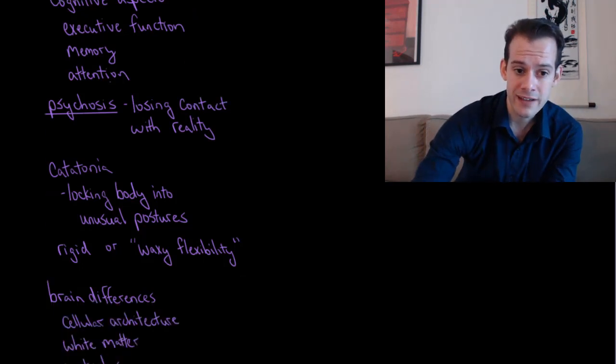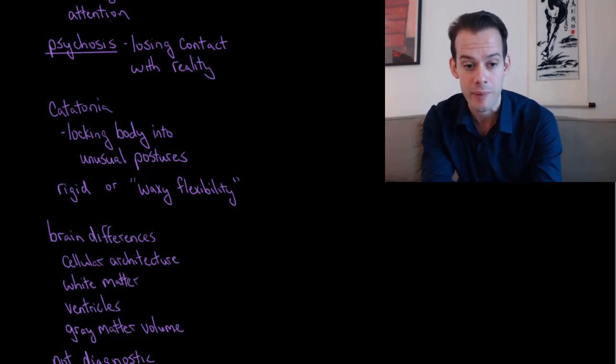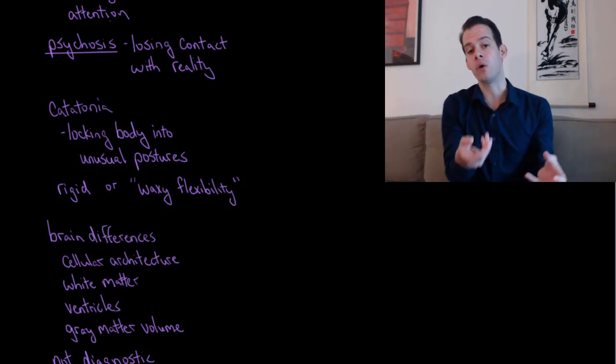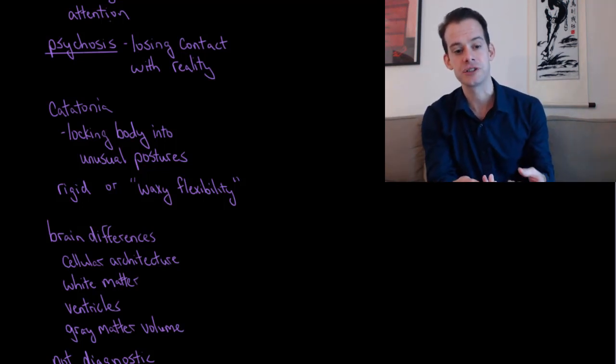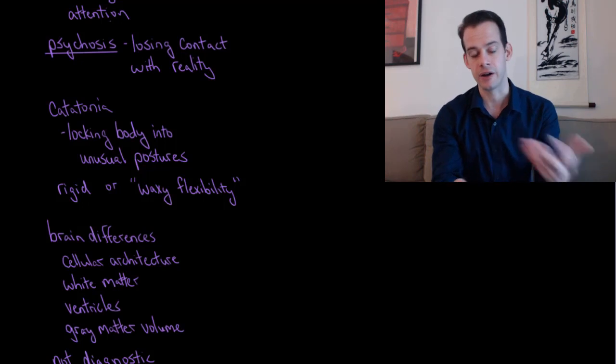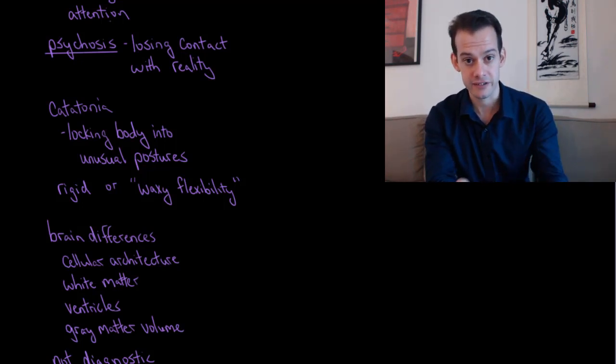I'd like to describe one type of catatonia here. This is not the only type. There's other listings in the DSM including things like mutism that would fall under catatonia, abnormal motor behavior. One thing we see is locking the body into unusual postures. This is one common type of catatonia that we see in patients with schizophrenia. They might hold strange body postures. Within this, there's different ways that this can occur. In some cases, they become very rigid and they'll resist movement. If a nurse or other staff member attempts to move the patient, they'll resist that movement in this catatonic state.